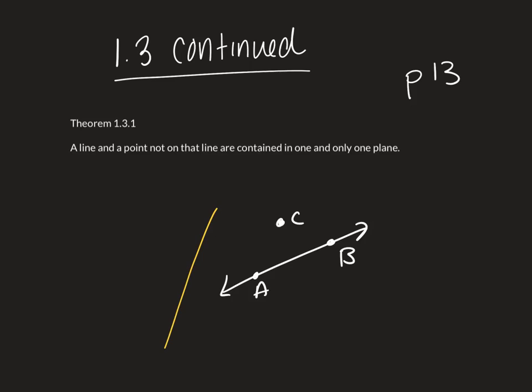This theorem says that these two things have to be contained in one plane, there's only one plane that can contain those two things. So, if you think back to our expansion postulate, a line contains at least two points, which we called A and B.